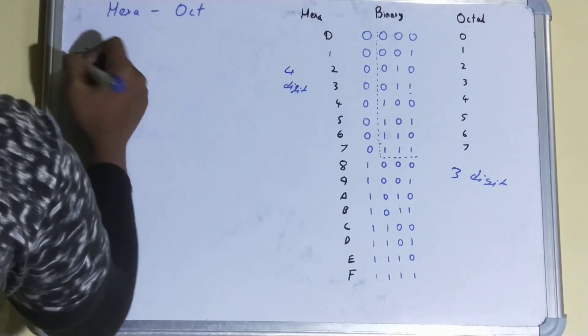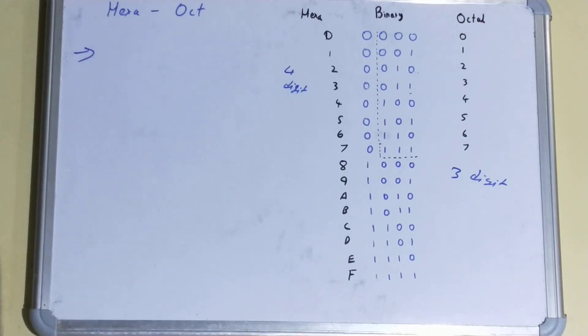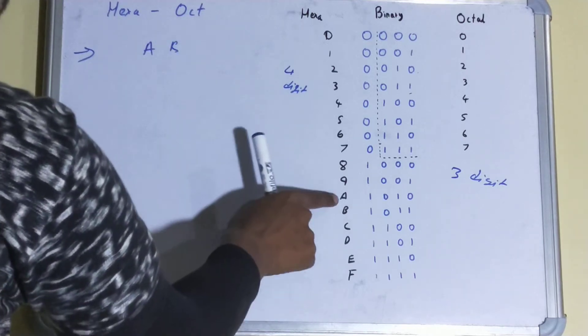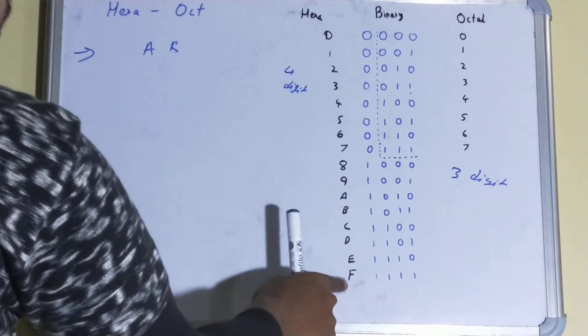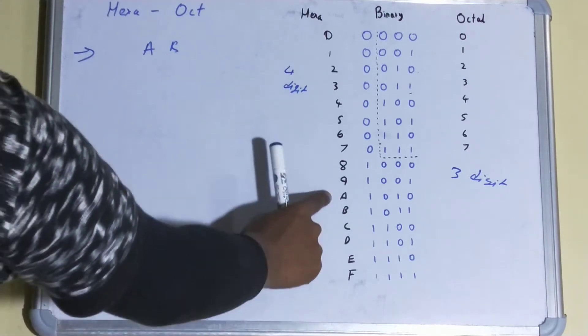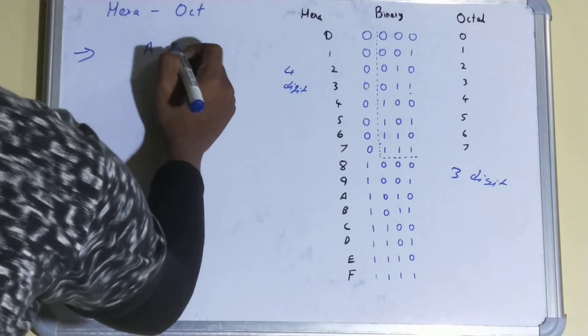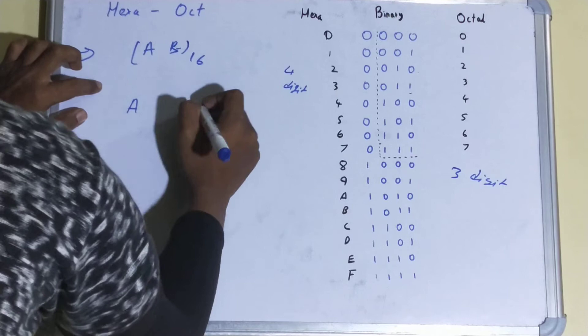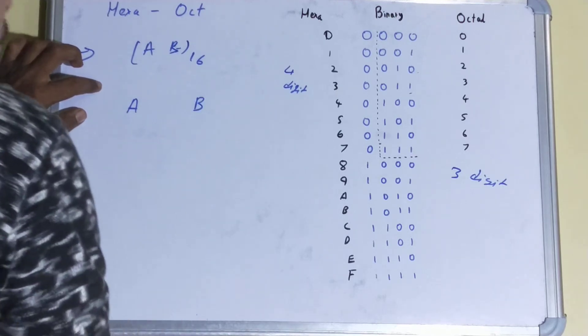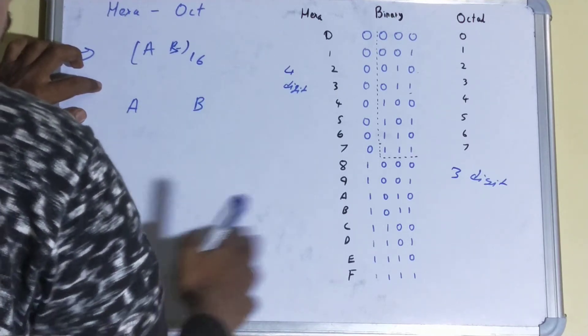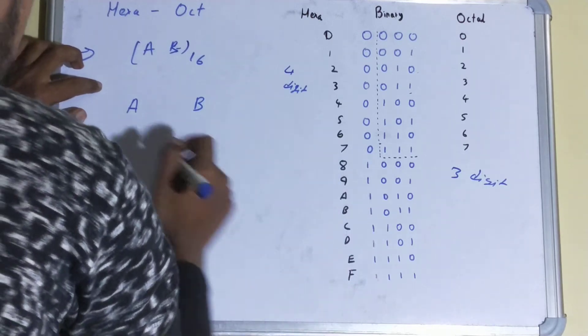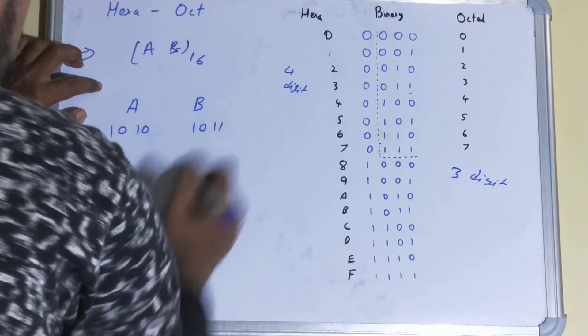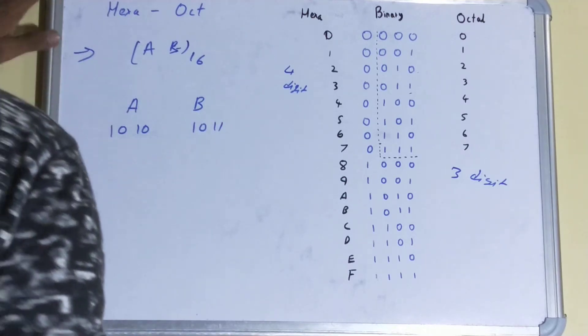Now let's start with the conversion. For example, you have your hexadecimal number as AB. Remember one thing: after nine this is ten, eleven, twelve, thirteen, fourteen, fifteen. So not to create confusion they use characters. If you have AB base sixteen, then what you'll do is you'll write A over here and you'll write B over here, and you will see the equivalent of A and B. So for A it is one zero one zero, and for B it is one zero one one.